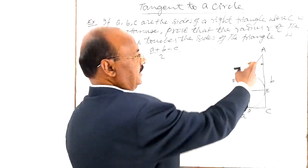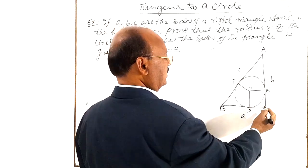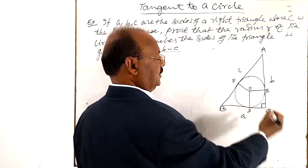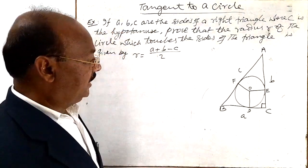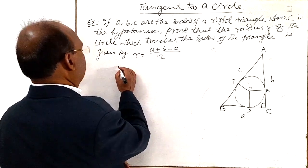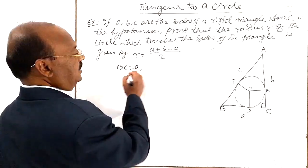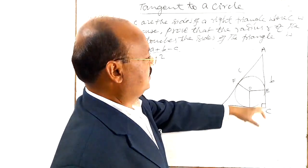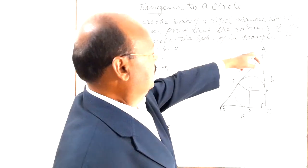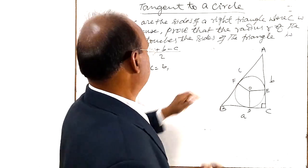So you see here ABC is a right angle triangle, right angle at C. And this side BC is A, here we can write side BC is A, side AC is B, and side AB is C.